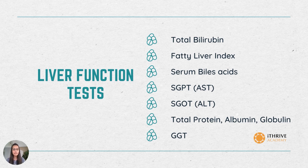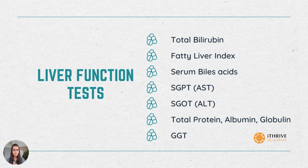There is a calculator which helps you calculate the fatty liver index. It incorporates measurements like your waist circumference, your body mass index (BMI), along with other blood parameters like GGT and triglycerides. That is how you can calculate your fatty liver index.